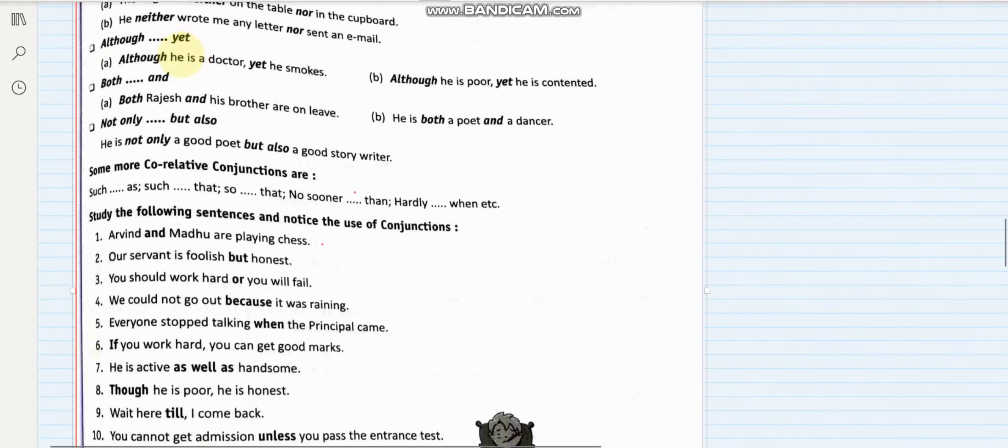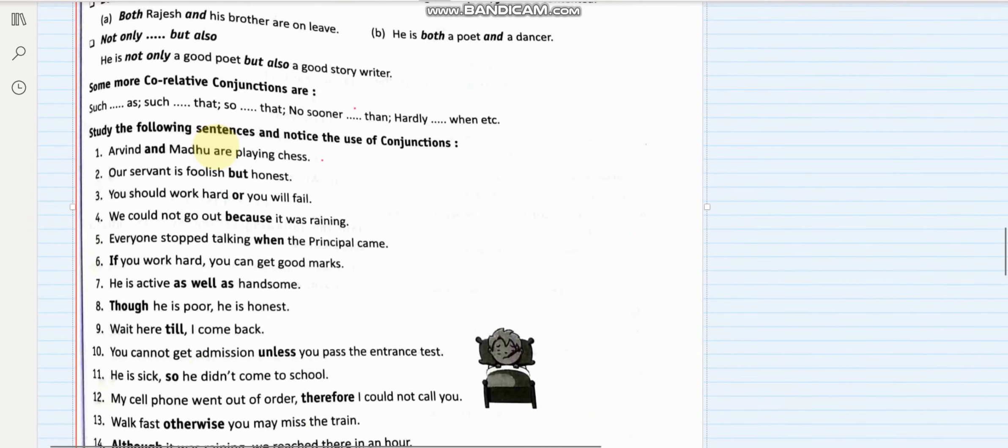Although/yet: Although he is a doctor, yet he smokes. So these tell us about two contradicting situations. Both/and: these both point towards the same condition. Not only/but also tells us about two things talking about the same situation.